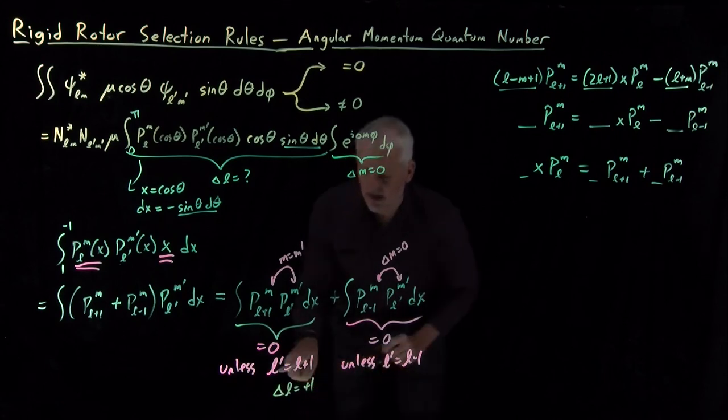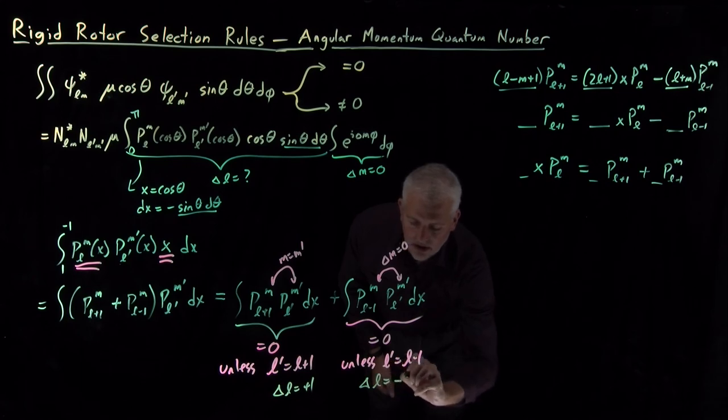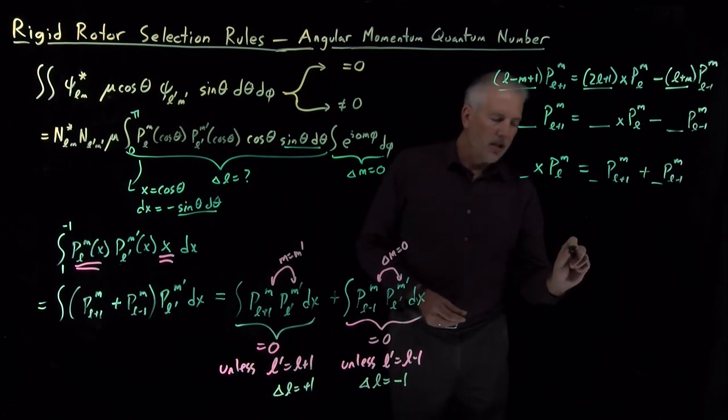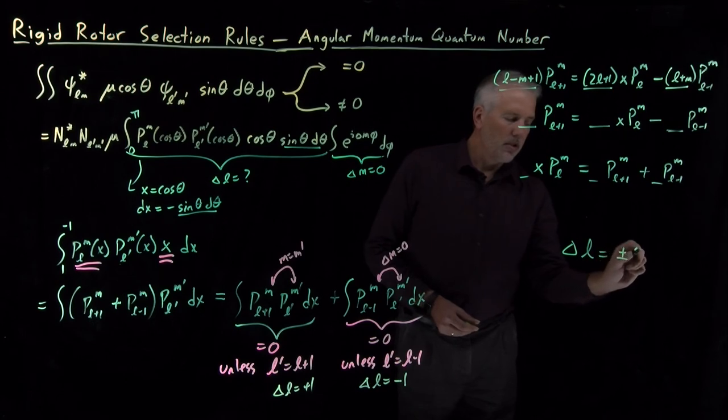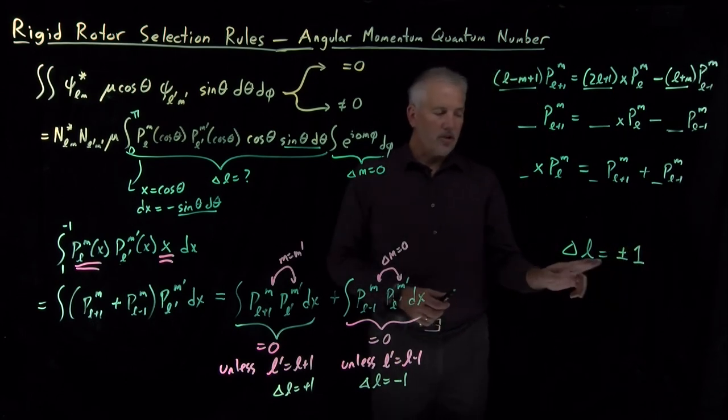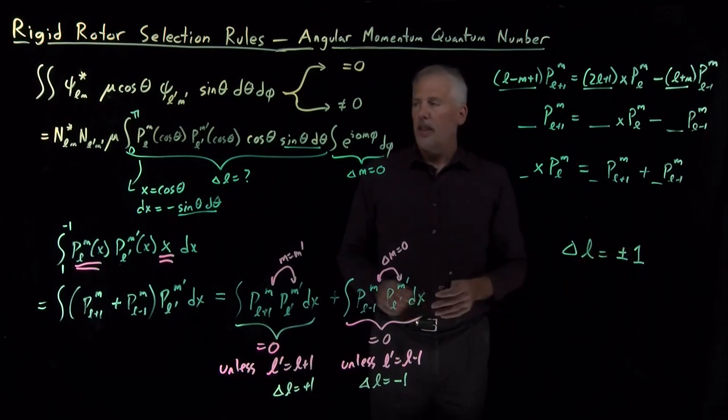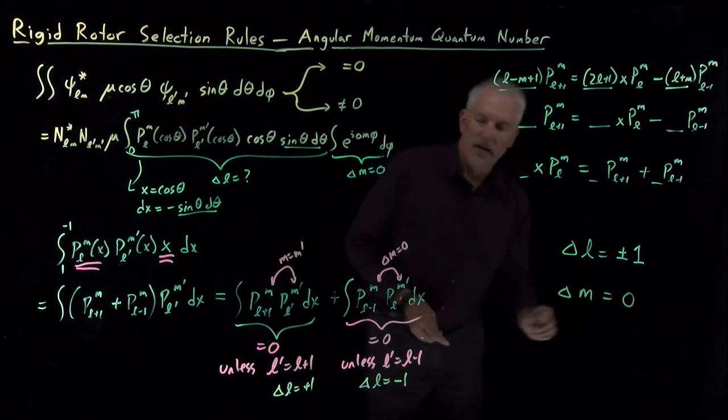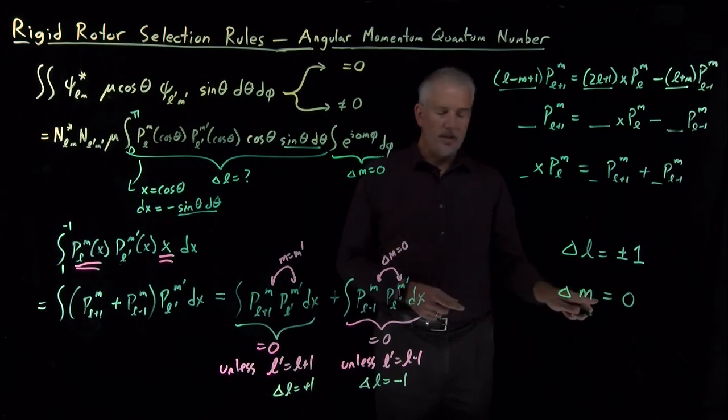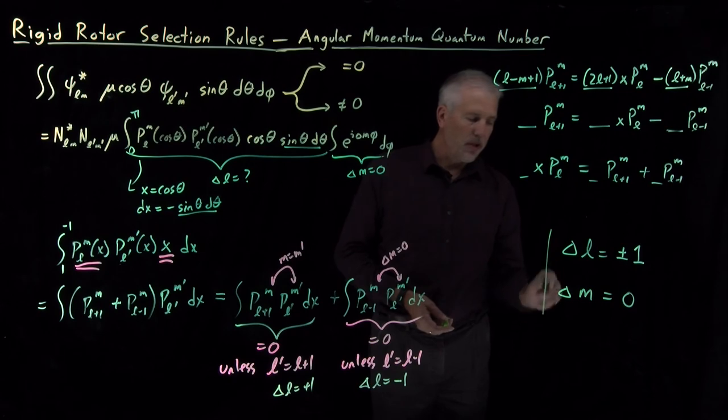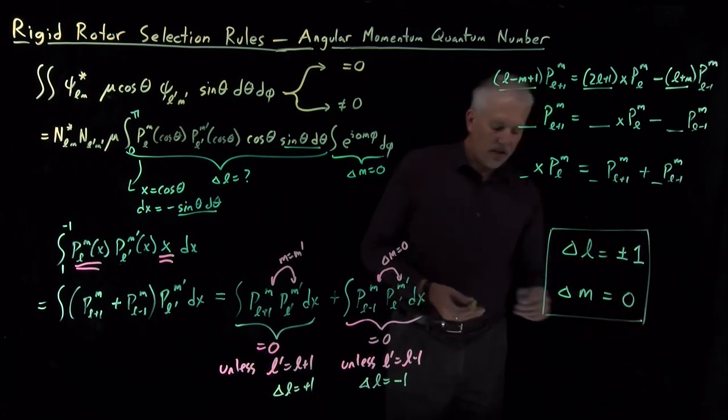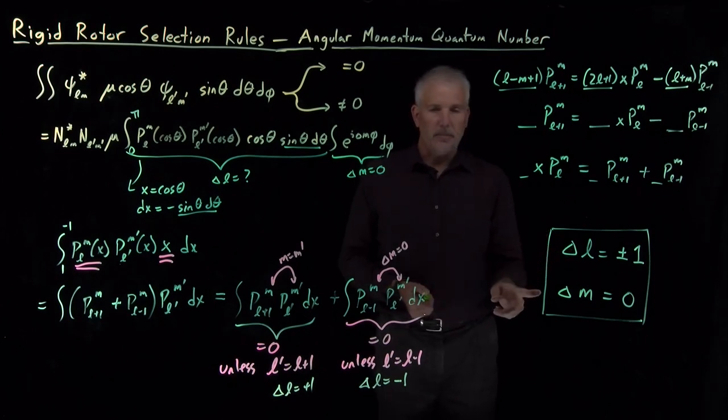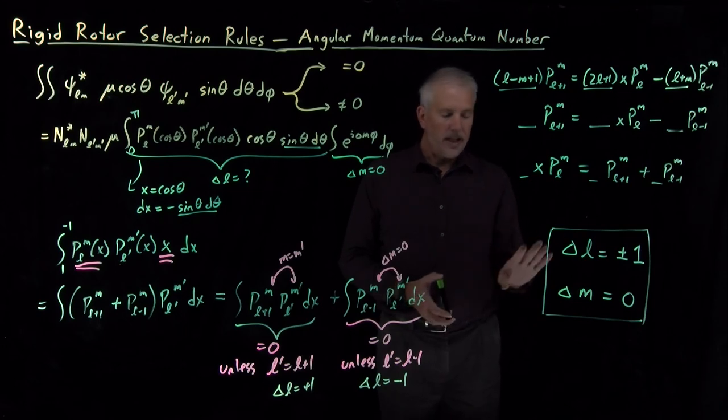The only way to make at least one of these integrals not equal to 0 is if I'm changing L by plus 1. In this case, L prime can be 1 higher than L, or if I'm changing by negative 1. If the value of L is decreasing by 1, then this integral will be non-zero. So our selection rule for the angular momentum quantum number: L is allowed to change by plus 1 or by minus 1. If it changes by any other value, then this theta contribution to the integral will be 0. We had seen previously the selection rule for the magnetic quantum number is that the change in magnetic quantum number has to be 0. It's not allowed to change. So those two selection rules put together tell us which transitions are allowed or forbidden for a rigid rotor. These are the conditions that a transition has to make in order for the transition to be allowed. Anything else in the transition will be forbidden.